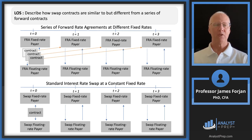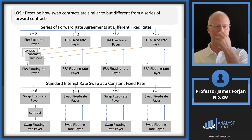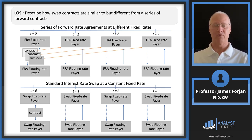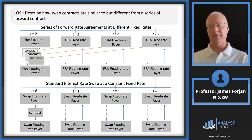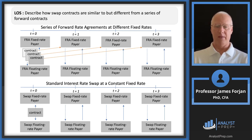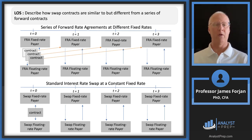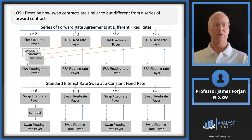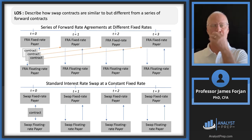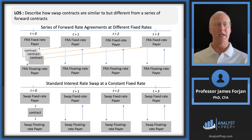Here's the illustration: look at the bottom first, the simple one. You and I agree to swap fixed for floating. At time period zero, we shake hands — there's the contract. Then at the end of each subsequent period, one of us pays the fixed rate. Across the top: swap fixed rate payer, swap fixed rate payer, swap fixed rate payer — all going to be the same fixed rate. The floating rate payer at the bottom — we don't know what that is because interest rates go up and down. Now up in the series of forward rate agreements: we sign the contract today, settle at the end of time period one, sign another contract, settle at the end of time period two, and settle at the end of time period three.